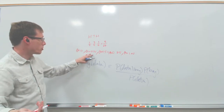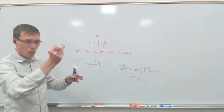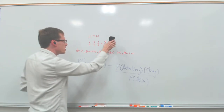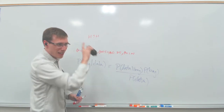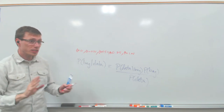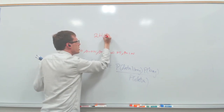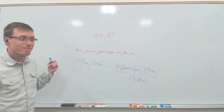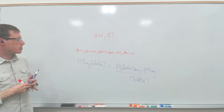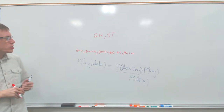Instead, I'm giving you a twist: two heads and one tails, but without telling you the order. We'll see it doesn't really matter. For the prior, we'll go in naively assuming each theta is equally likely, even though for a real bank coin we'd put almost all weight on the fair coin.